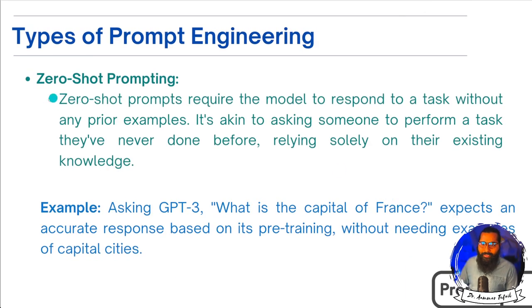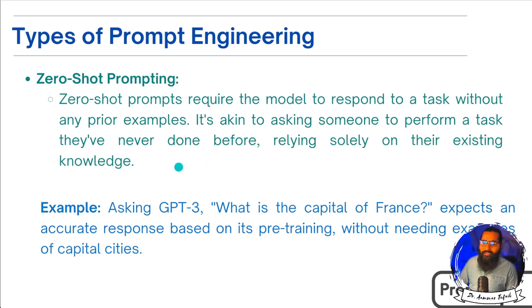The first type is Zero-Shot Prompting. Zero-Shot prompts require the model to respond to a task without any prior examples. This is like asking someone to perform a task they have never done before, relying solely on their existing knowledge. For example, if we ask GPT-3 what is the capital of France, it will give an accurate response based on its pre-training without needing examples of capital cities.